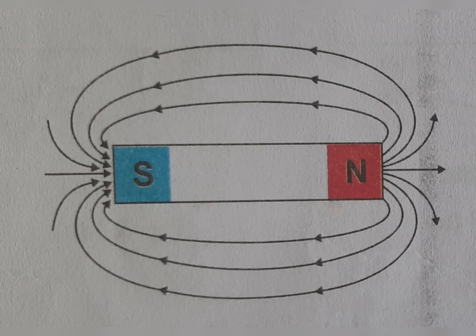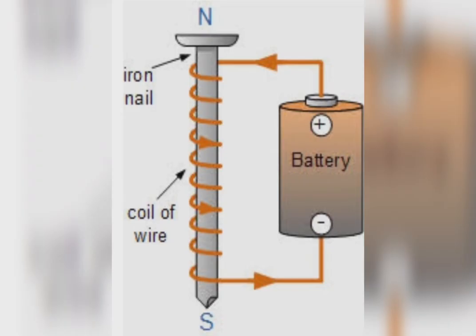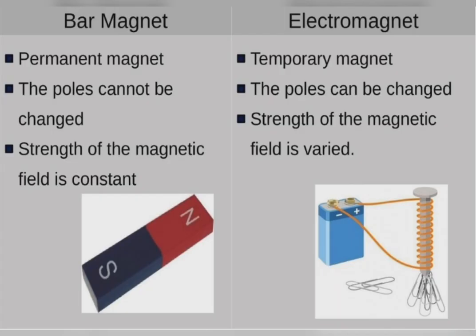Magnets are familiar to you. Magnets have polarity — two magnets attract each other or repel. The region around a magnet where the magnetic force is experienced is called magnetic field. This magnetic field is denoted by curved imaginary lines that start from north to south. These lines are called magnetic flux lines. A magnetic field is also seen around a current-carrying conductor, and that is why electromagnets are formed.